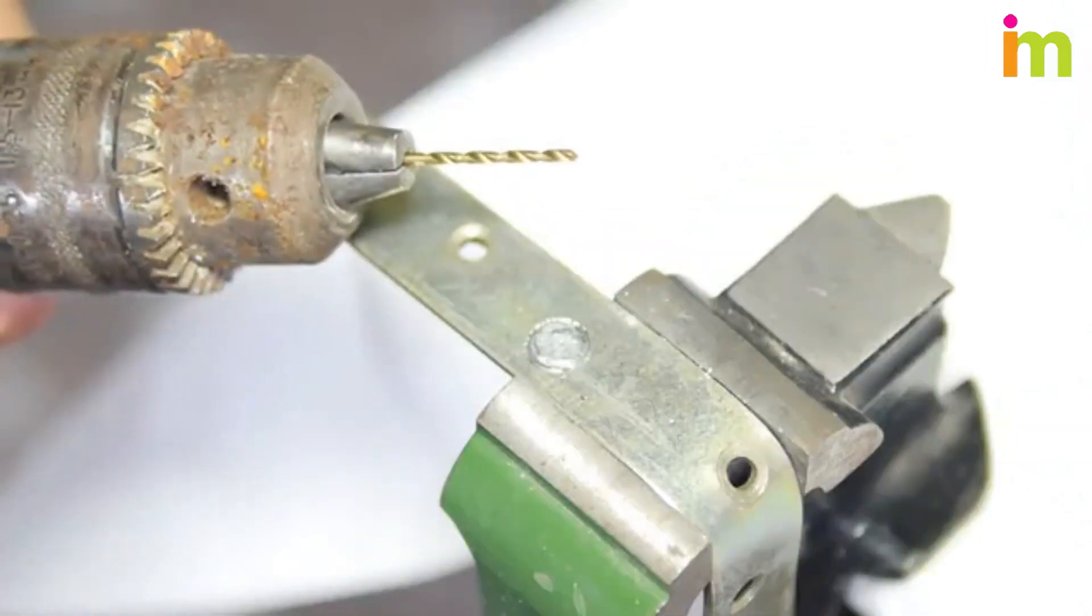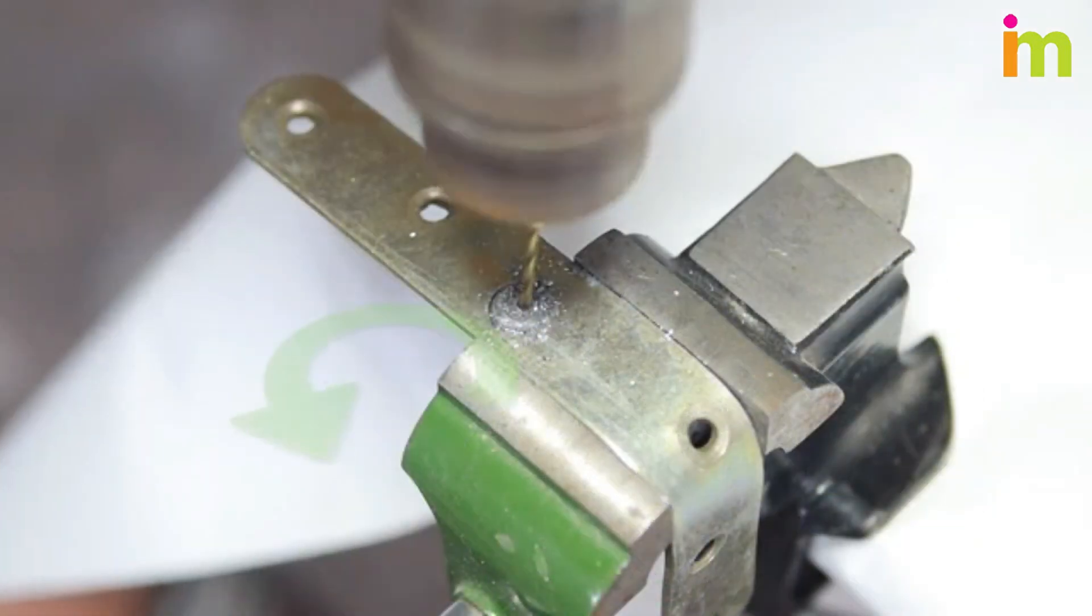You want to use a left-handed bit because it will turn in the opposite direction as the broken bolt, which will stop the bolt from being driven in tighter.